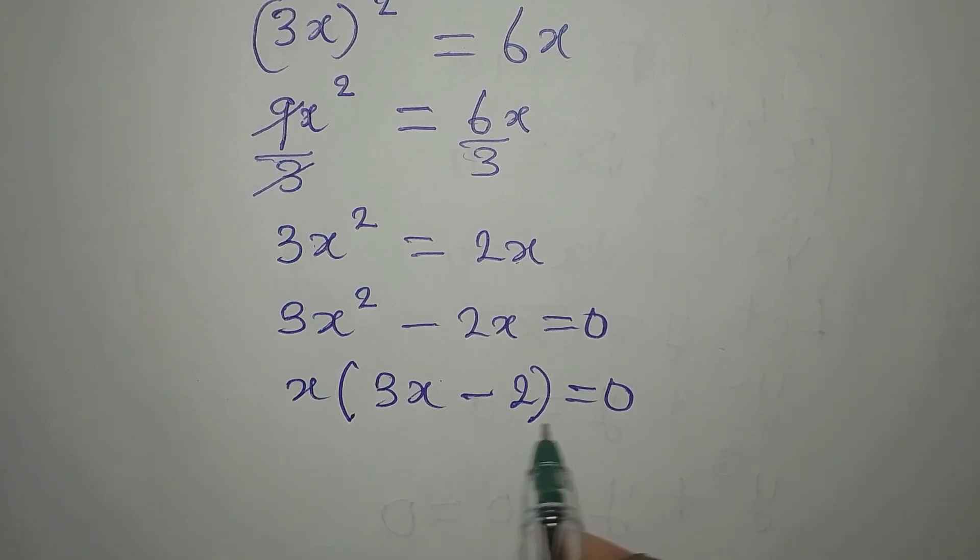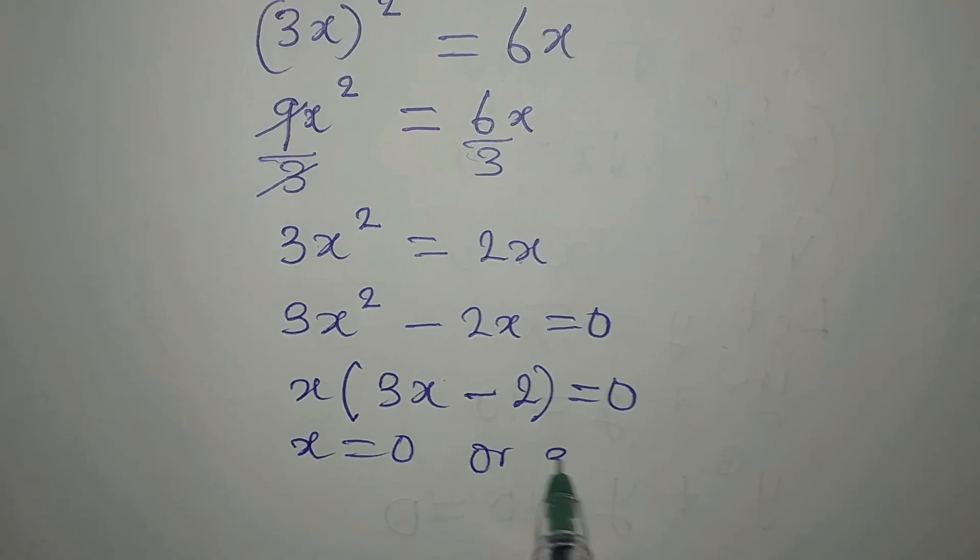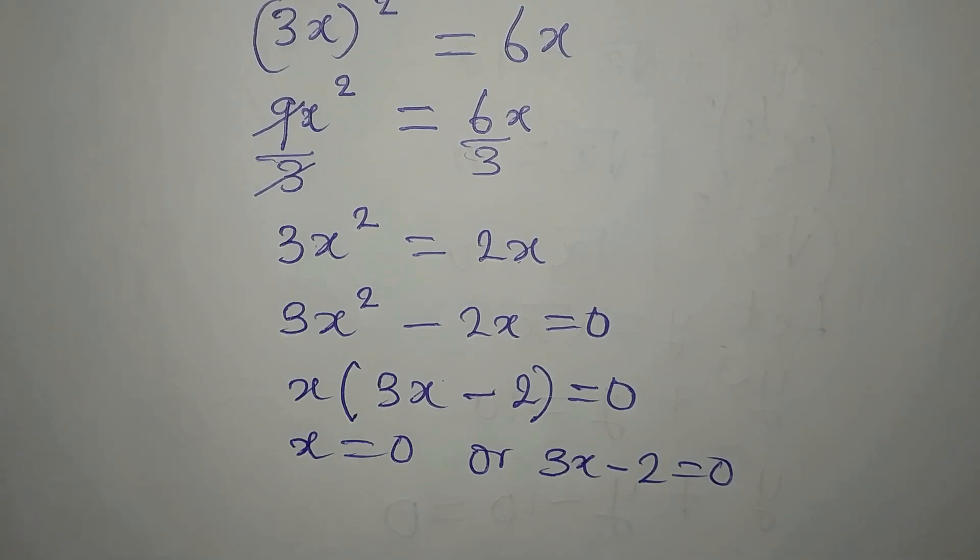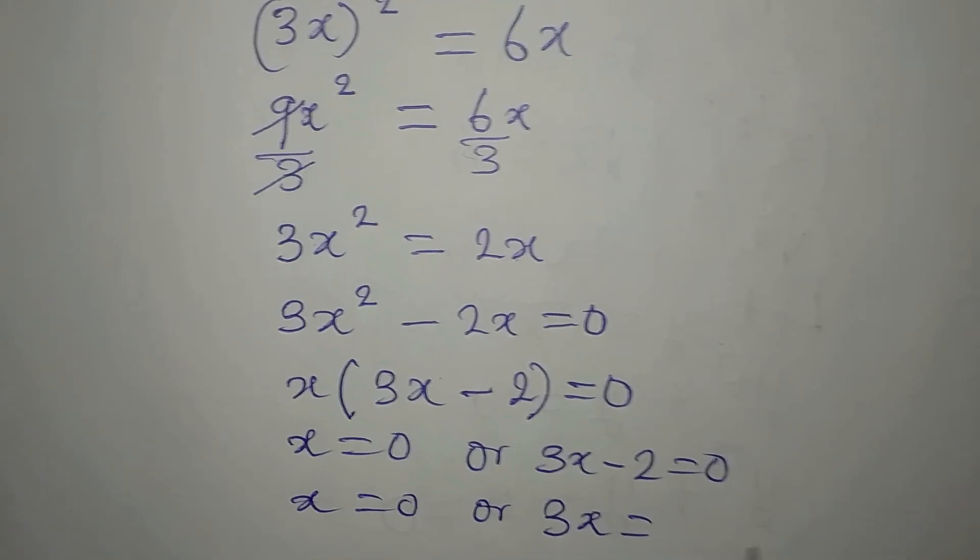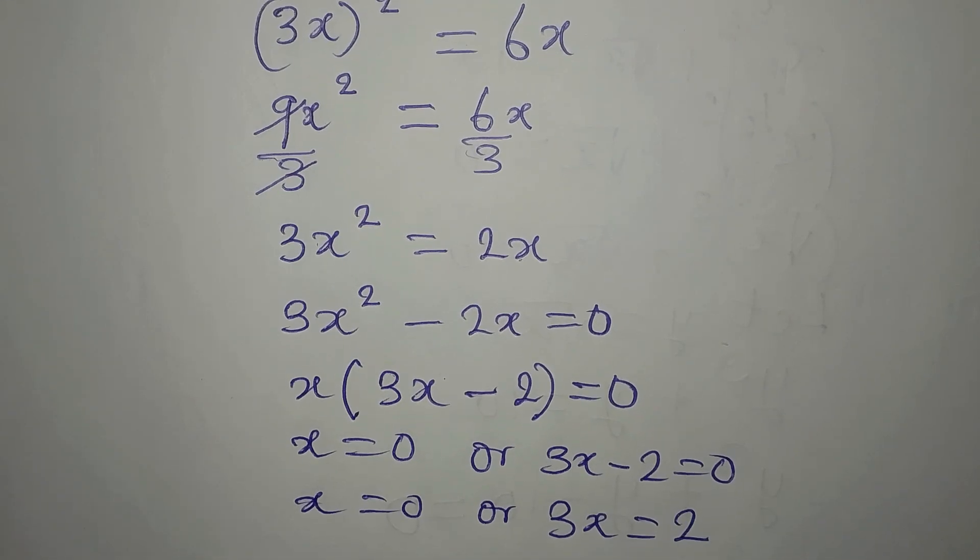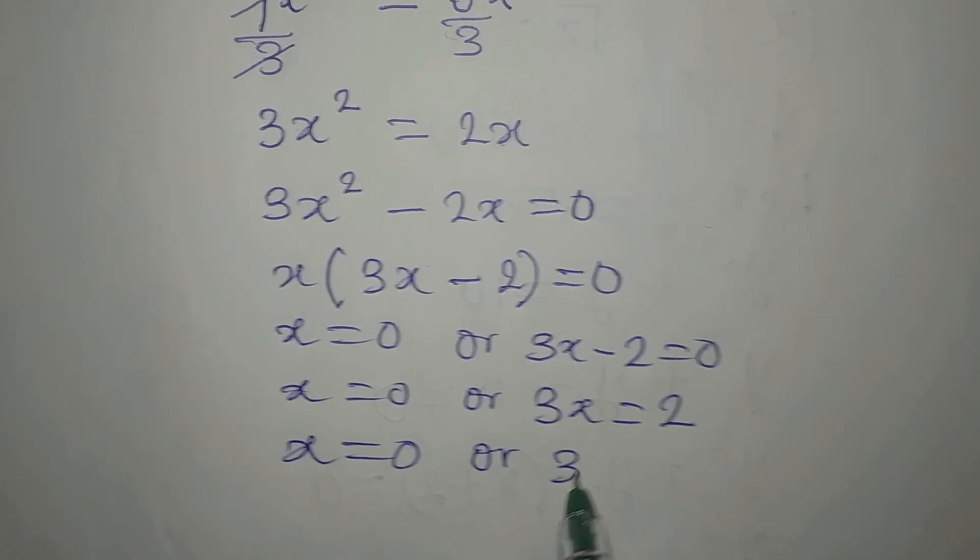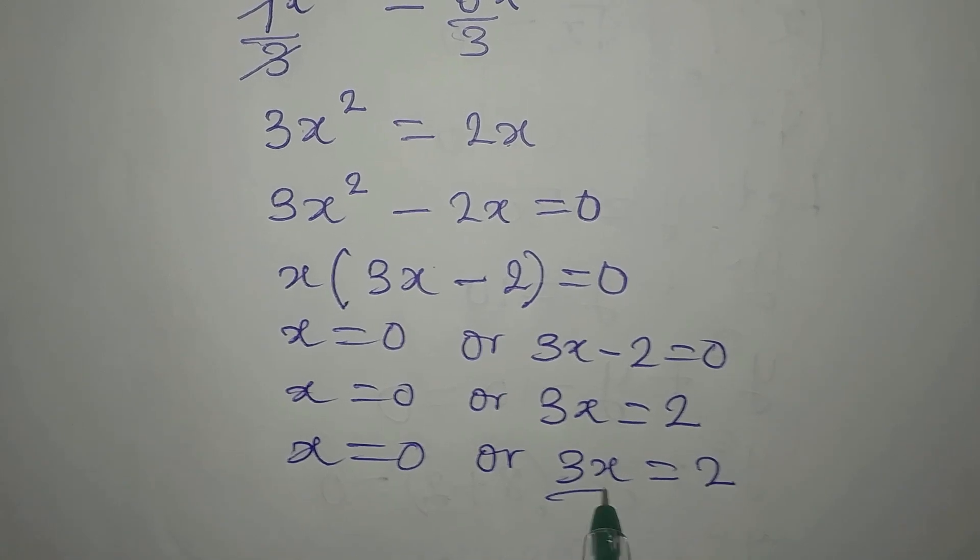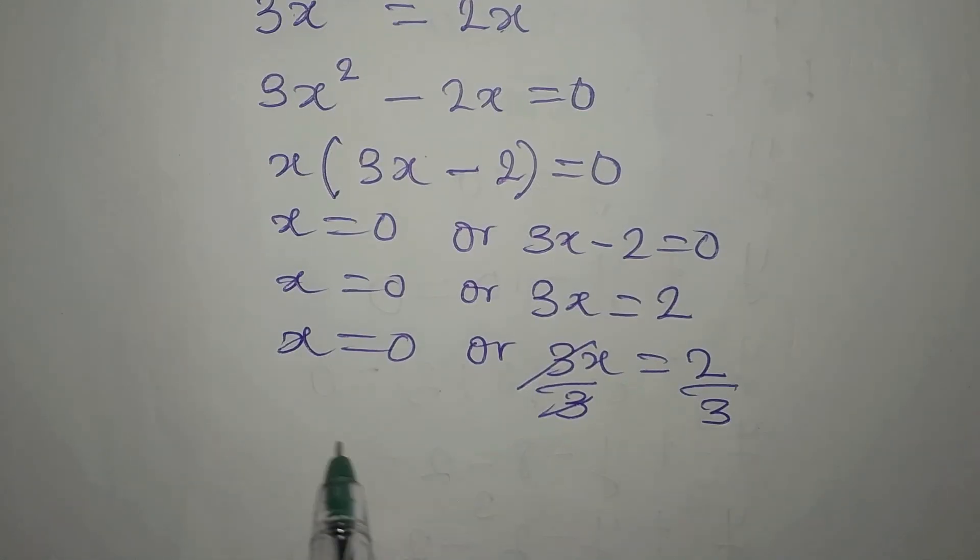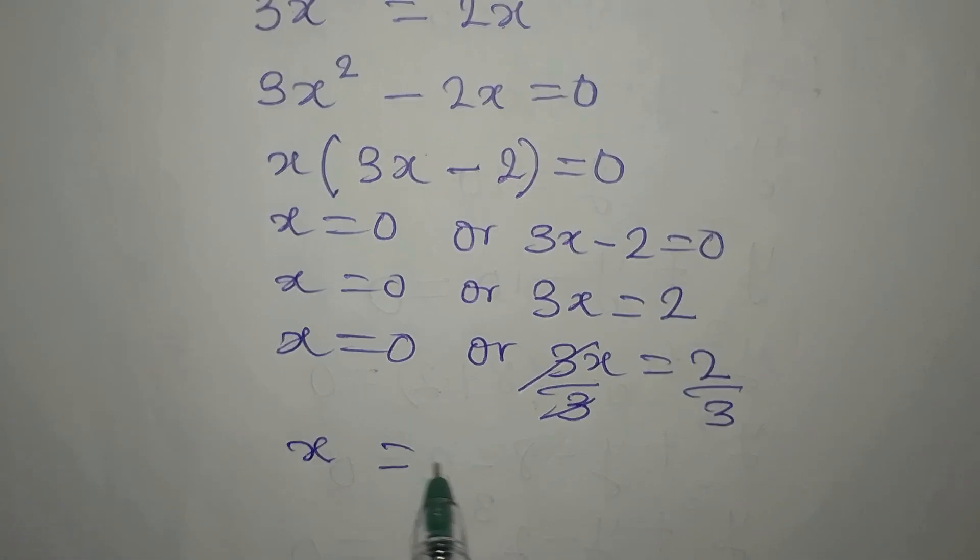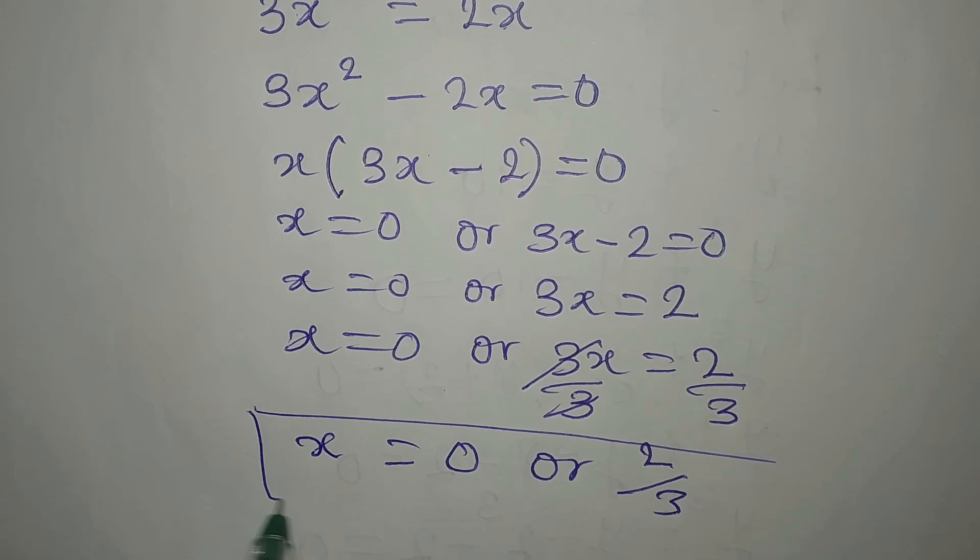Now we have two terms to multiply. x equals 0 or 3x minus 2 equals zero. x equals 0 or 3x equals 2. x equals 0 or 3x equals 2, divide by 3. 3 will go, then we are saying that x is now 0 or 2 over 3. So from here we have the solution.